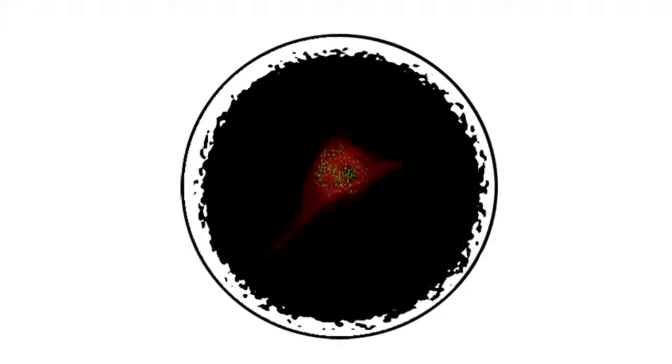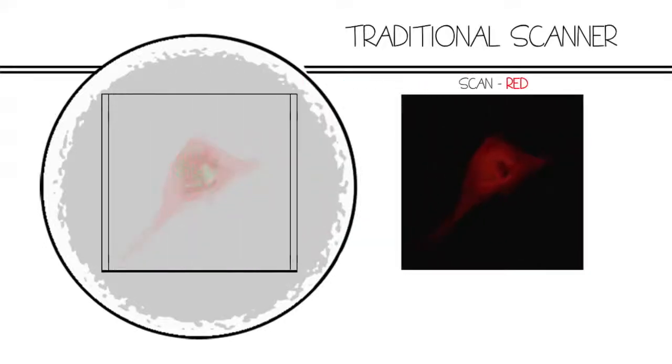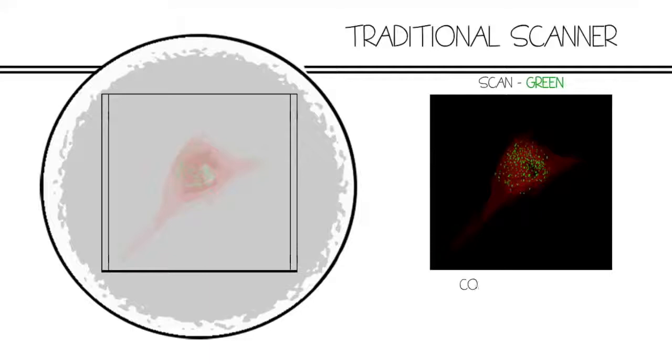High-speed scanning is necessary to image rapidly changing biological processes. With traditional scanning techniques, imaging speed is limited by the number of fluorophores in a sample, and rapid acquisition often comes at the cost of image resolution.